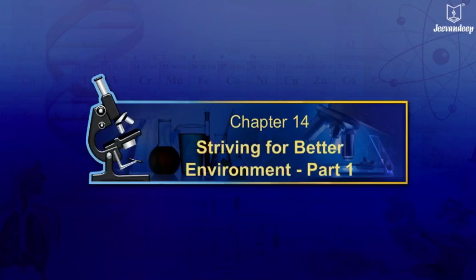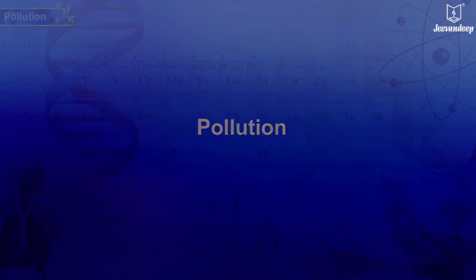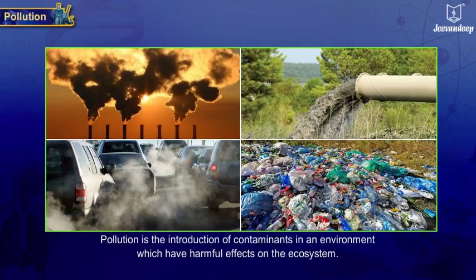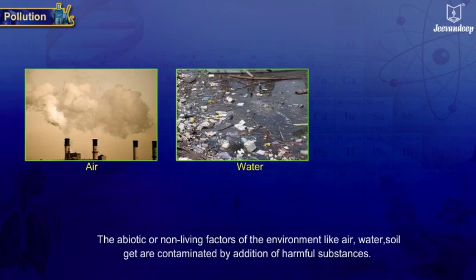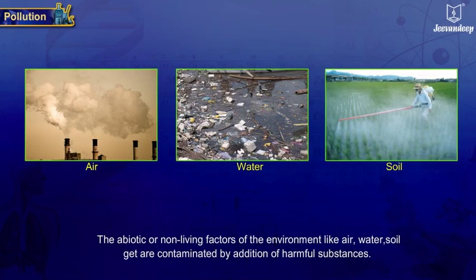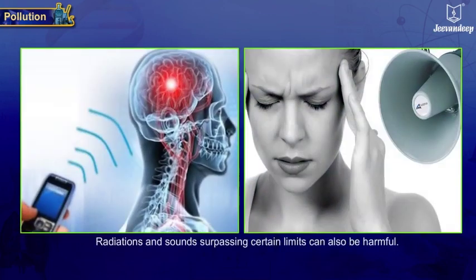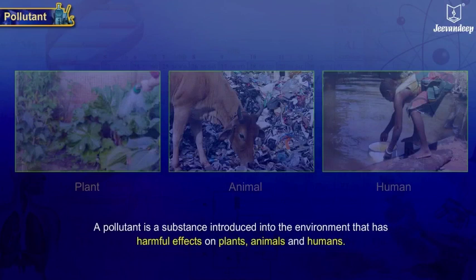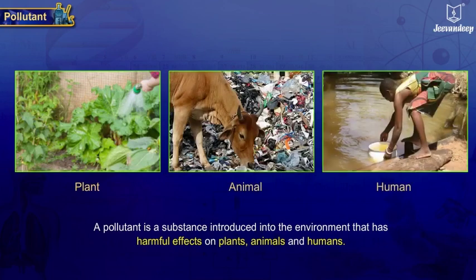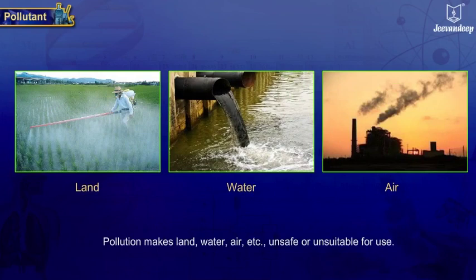Chapter 14: Striving for a Better Environment, Part 1 — Pollution. Pollution is the introduction of contaminants in an environment which have harmful effects on the ecosystem. The abiotic or non-living factors of the environment, like air, water, and soil, are contaminated by harmful substances. A pollutant is a substance introduced into the environment that has harmful effects on plants, animals, and humans — it makes land, water, and air unsafe or unsuitable for use.